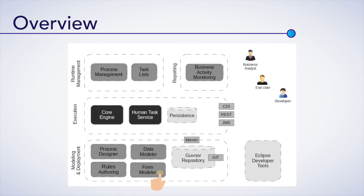Form Modeler: Form modelers will allow you to edit and generate forms that are related to your business process. This tool will help you create forms even if you are not well versed with template markup or coding skills. Rules Authoring: The Rules Authoring tool helps you to specify the various kinds of business rules that need to be incorporated with your respective business processes. These are primarily guided rules, decision tables and so on.